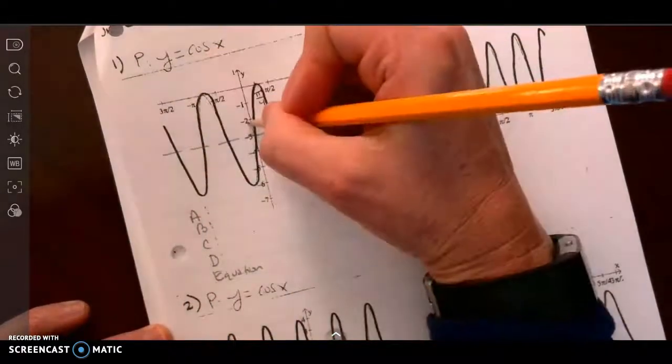My first step is always to draw on my axis. I see that I'm 6 total, so 3 would be in the middle. 1, 2, 3 right here. And then I always double check: 1, 2, 3 above, 1, 2, 3 below. So my amplitude is 3.